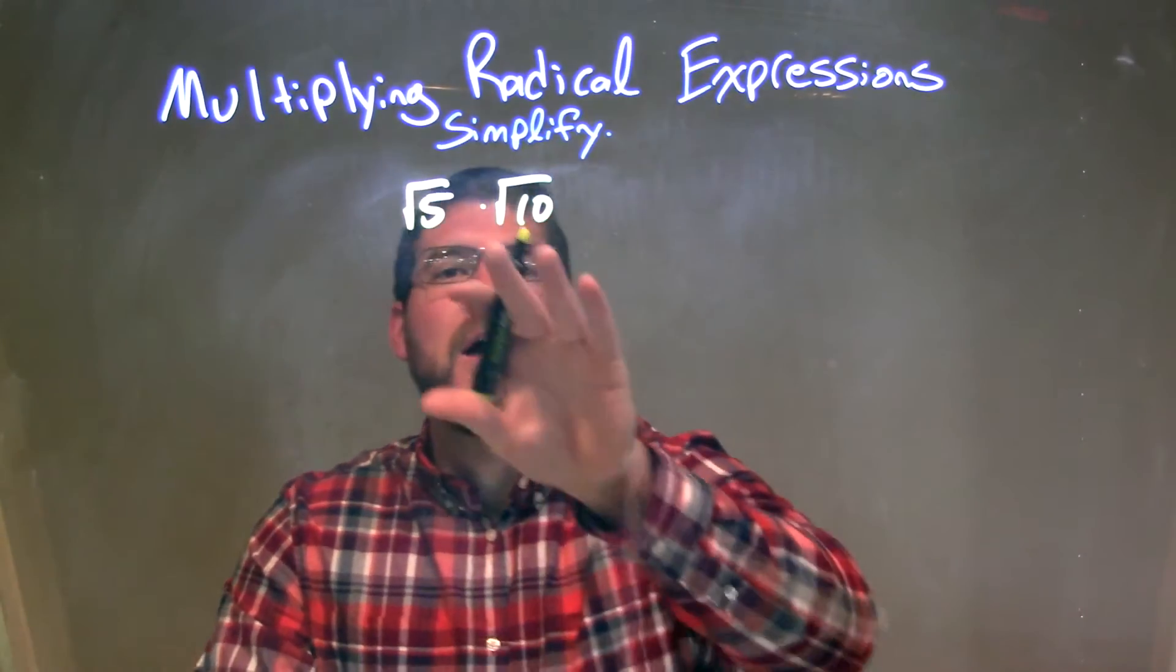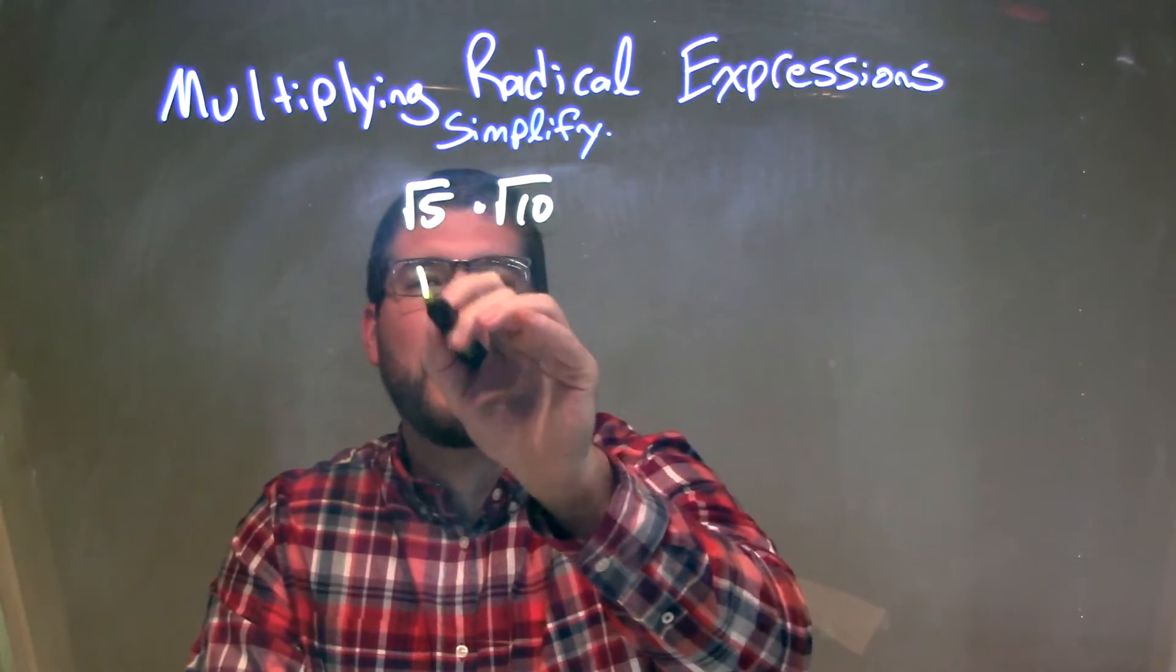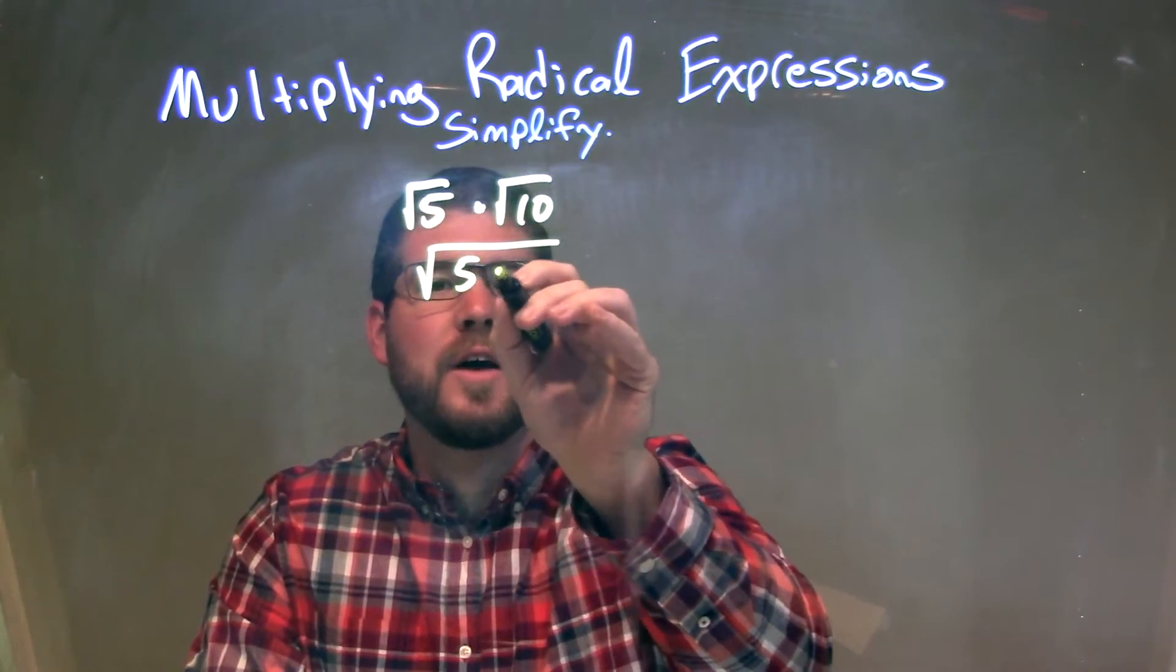Well, what we can do here is I can combine these, since it's being multiplied here. By the rules of multiplying square roots, I can combine them under 1 square root, so 5 times 10.